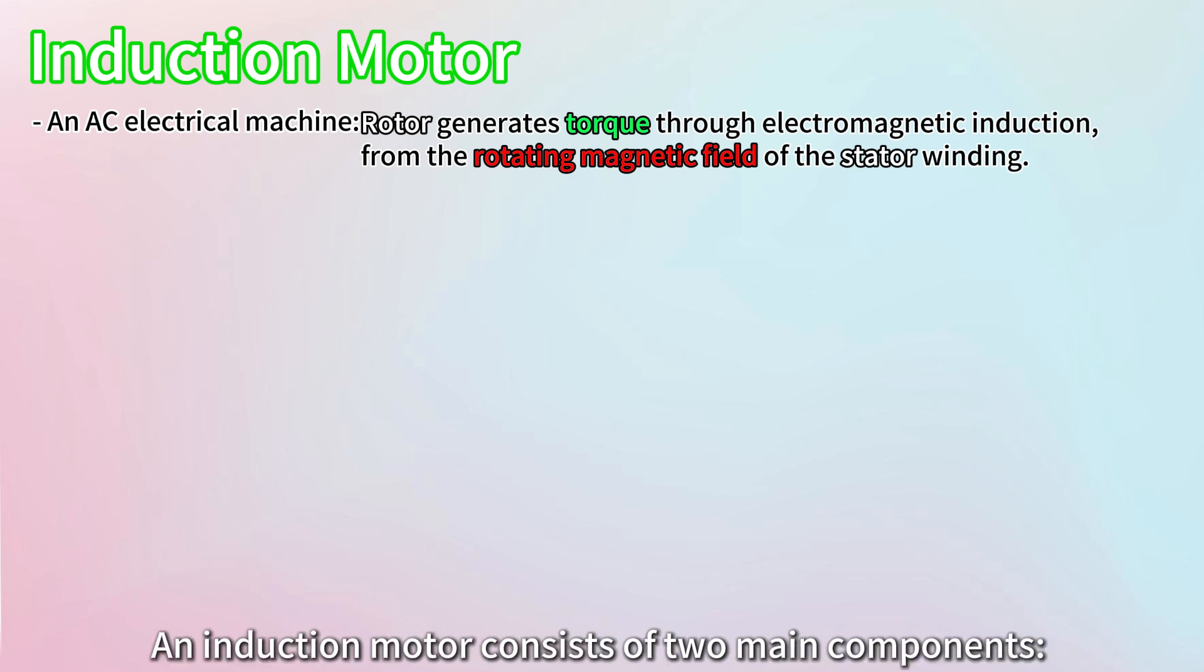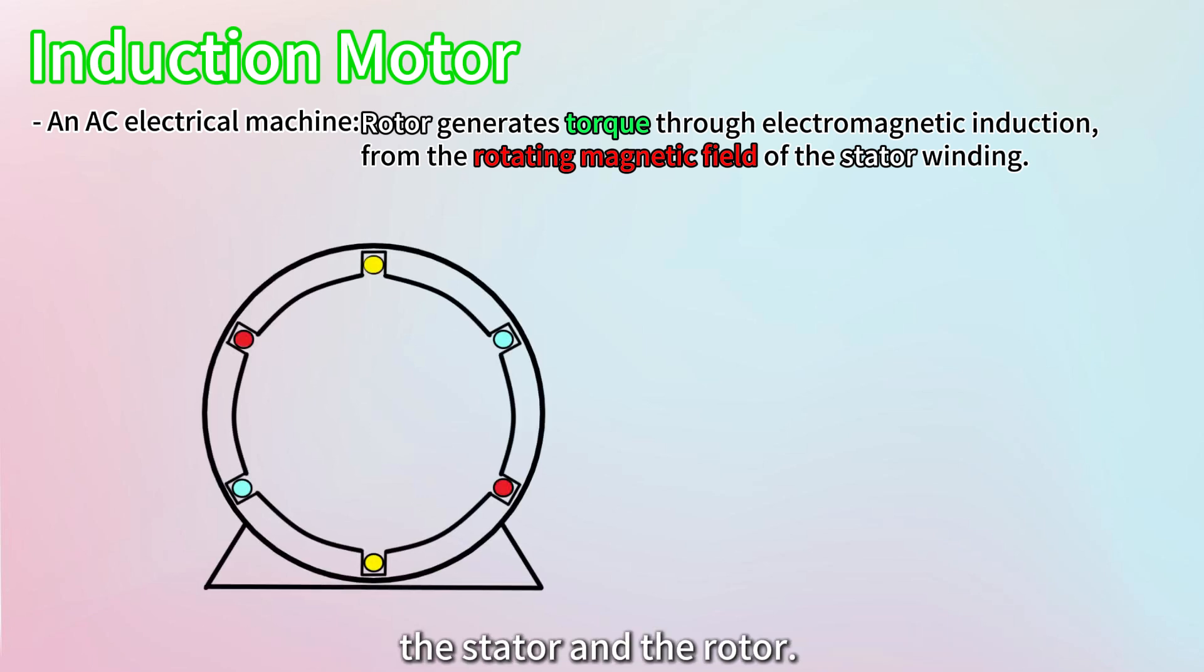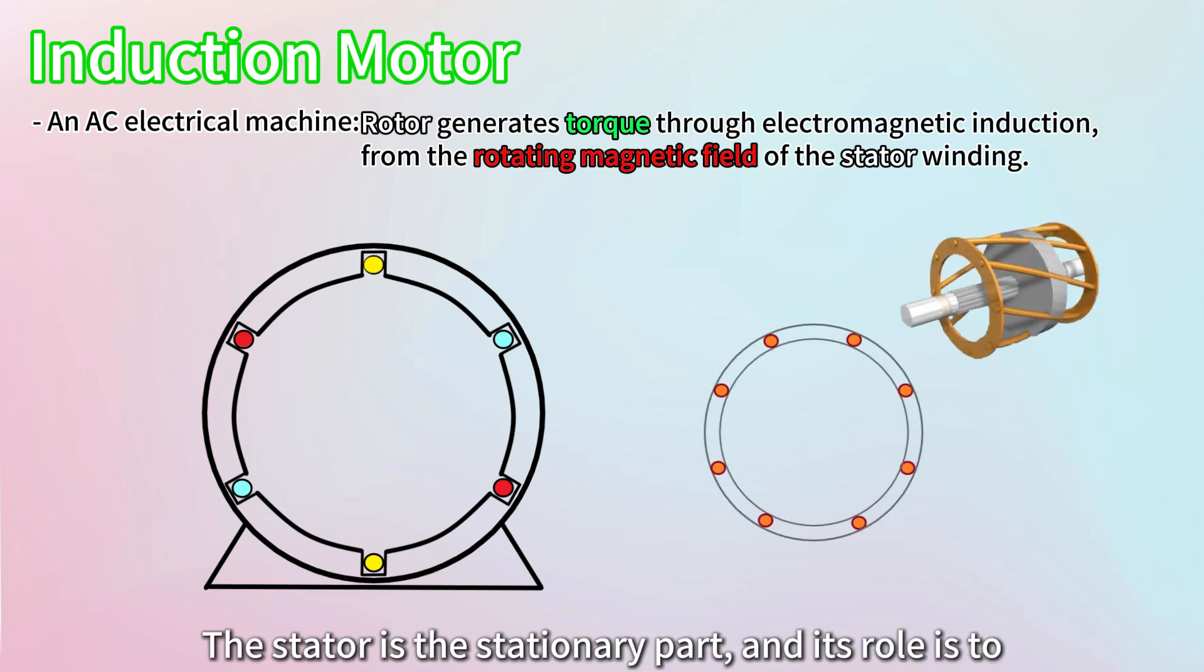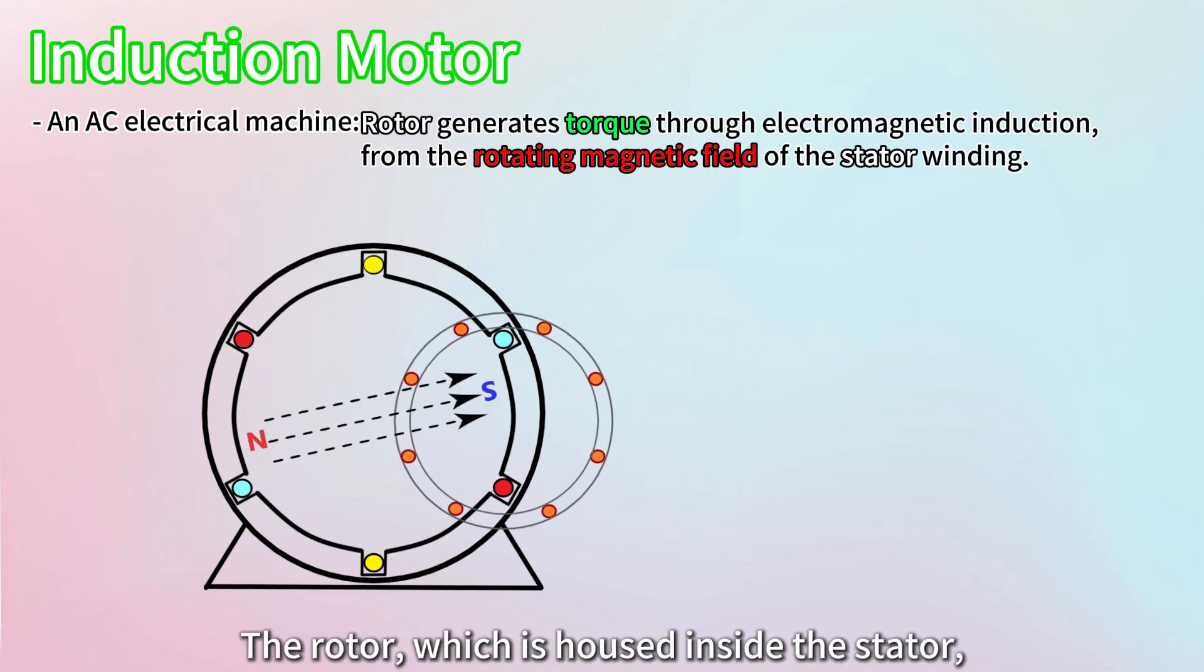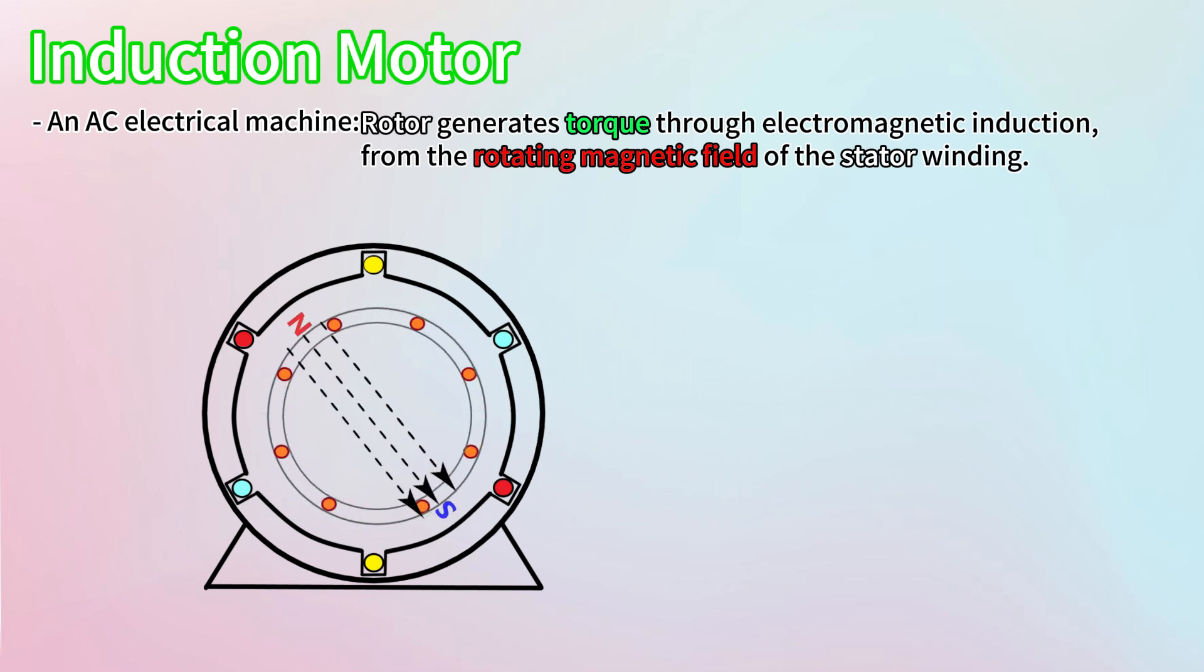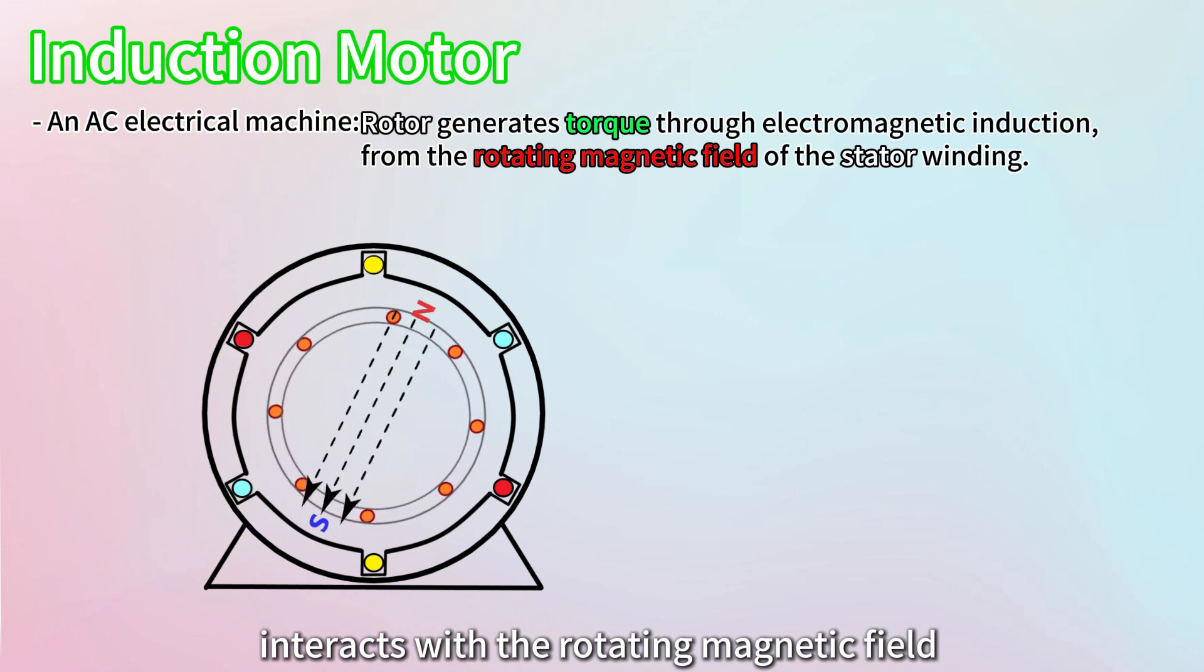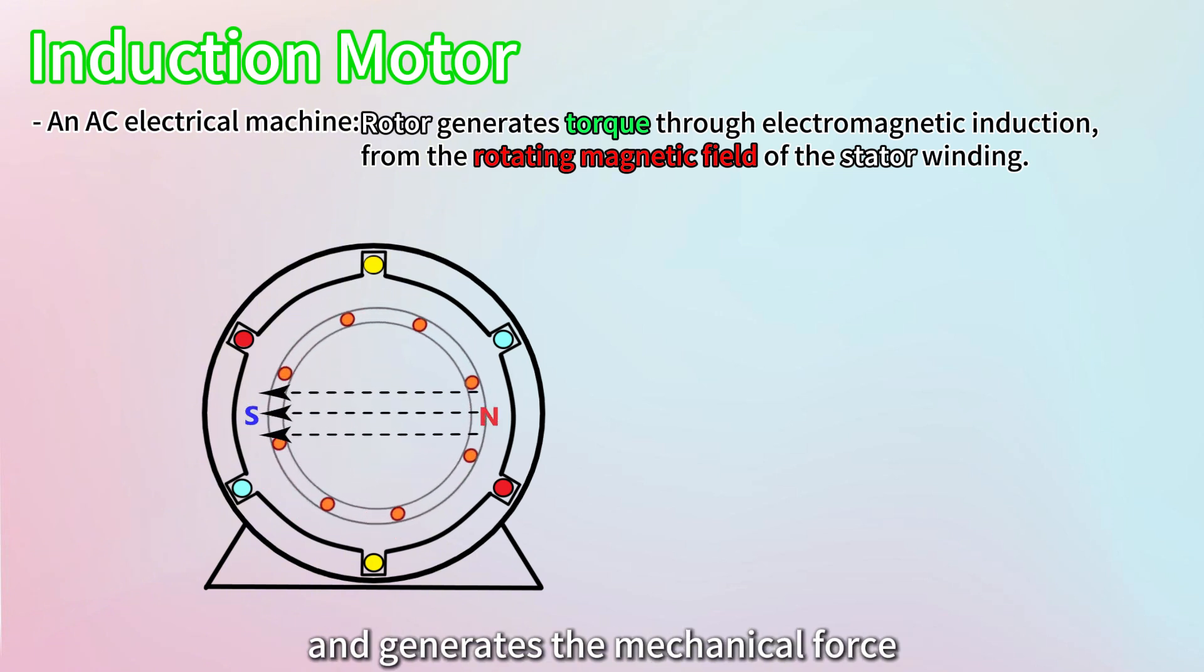An induction motor consists of two main components, the stator and the rotor. The stator is the stationary part, and its role is to create a rotating magnetic field. The rotor, which is housed inside the stator, interacts with the rotating magnetic field and generates the mechanical force needed to spin.